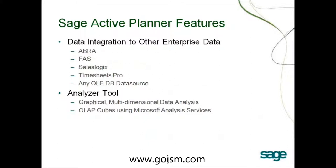Going beyond the general ledger, Active Planner also delivers that same integration to all your other enterprise data as well. You can link to all the other data you have on your system via ODBC. Whether you have information in Abra, FAS, SalesLogix, Timesheets Pro, or any ODBC compliant data source such as Excel, Access, third-party software, or other payroll software, we can link to those data sources and bring that data into all the appropriate places in Active Planner automatically.